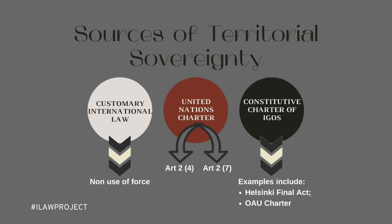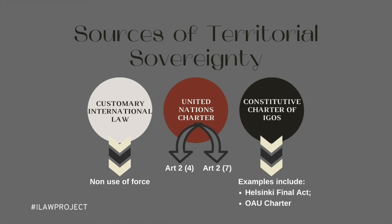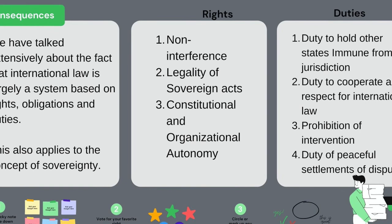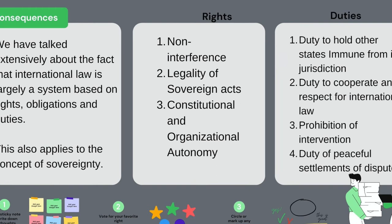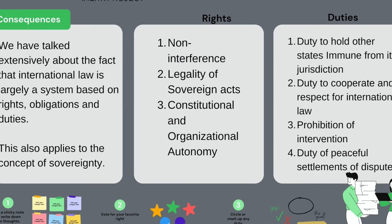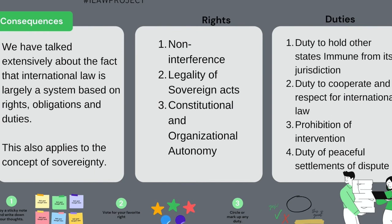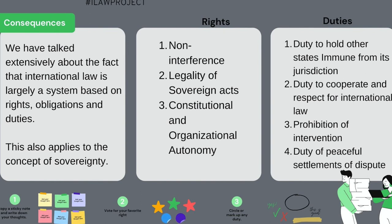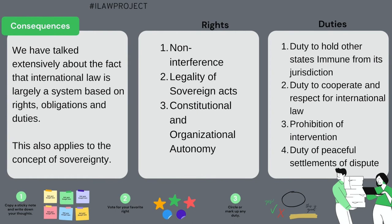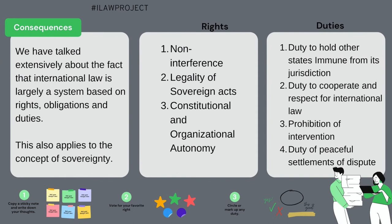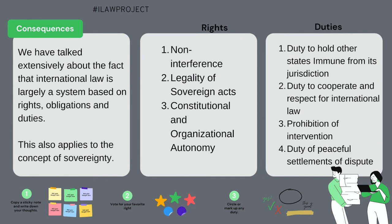What consequence does this carry under international law? International law is largely a system based on rights, obligations, and duties, and this also applies to the concept of sovereignty. Sovereign states have the following rights: non-interference, legality of sovereign acts, and constitutional and organizational autonomy. When any of these rights are breached by an organ of another sovereign state, the affected state has a right to bring claims for internationally wrongful acts. Sovereign states also have corresponding duties: the duty to hold other states immune from its jurisdiction, the duty to cooperate and respect international law, the prohibition of intervention in other sovereign states, and the duty of peaceful settlement of disputes.